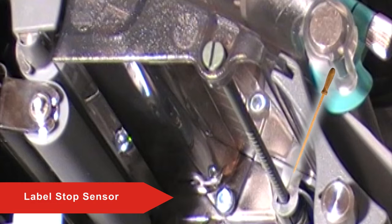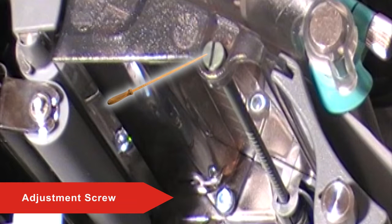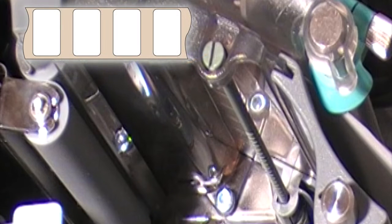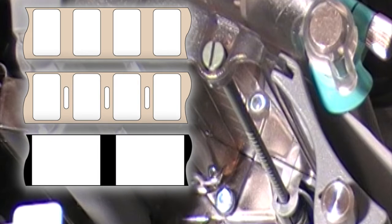The Label Stop or Black Mark Sensor, LSS, is a photoelectric sensor that controls the printer's media feed by detecting gaps between labels, slots, or black marks in continuous stock, depending on the printer's media type setup.